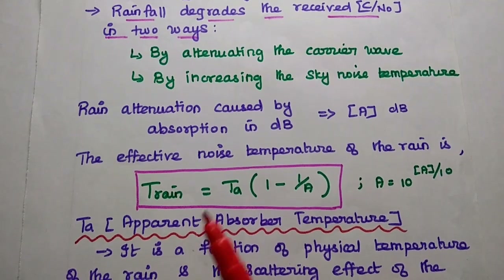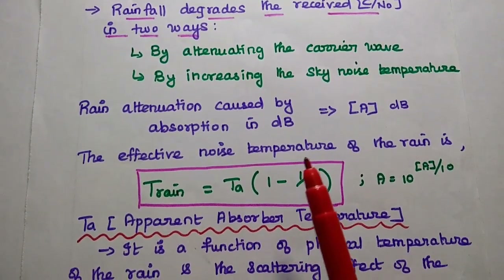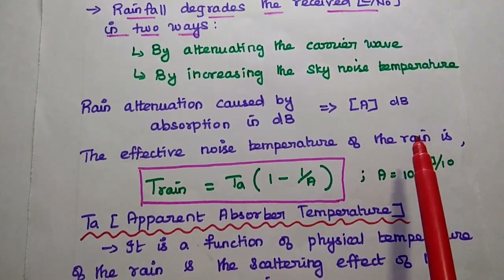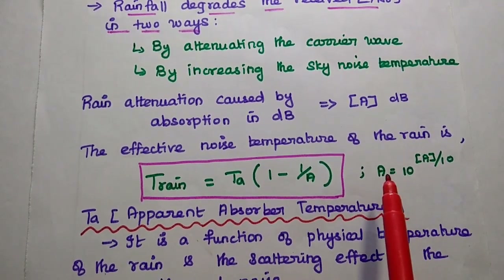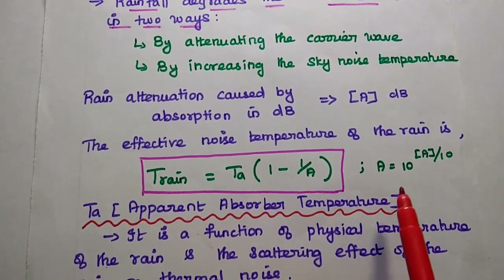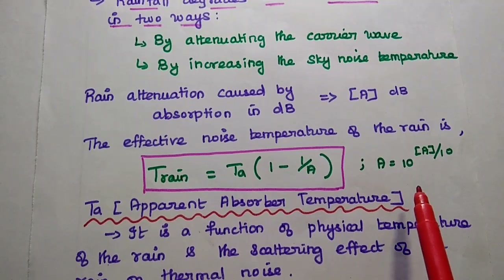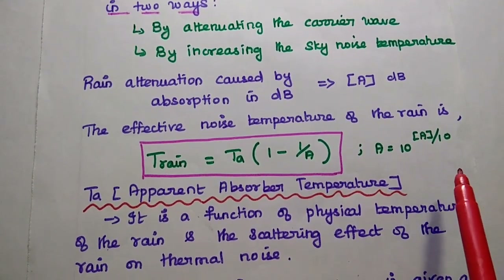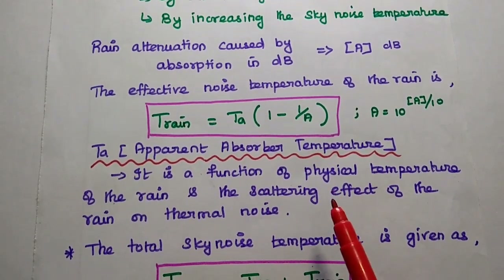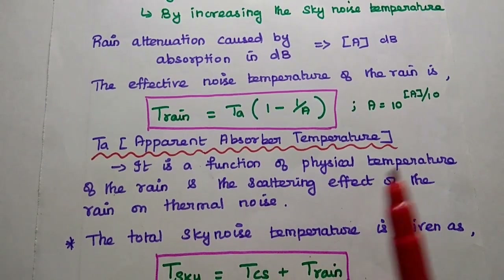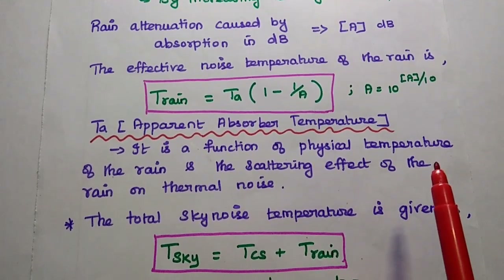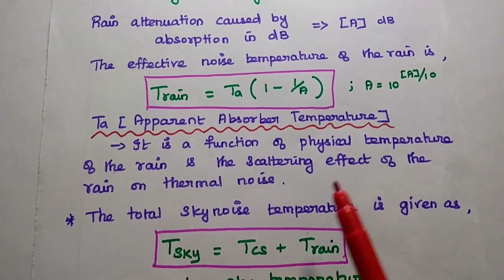The rain attenuation caused by absorption is represented in dB as A, where the square bracket indicates the value is in dB. The effective noise temperature of the rain is given as T_rain = T_A × (1 − 1/A), where A is the power loss ratio equal to 10^(A/10), and T_A is the apparent absorber temperature, which is a function of the physical temperature of the rain and also the scattering effect of the rain on thermal noise.